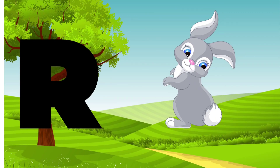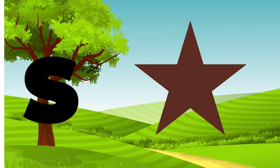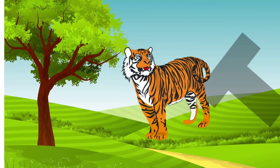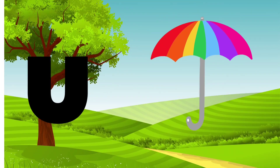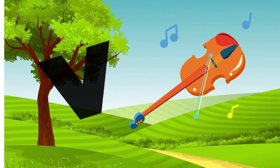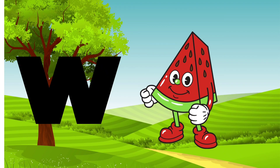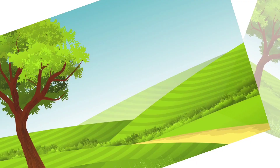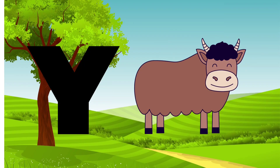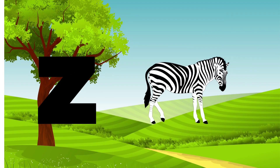R for rabbit, S for star, E for tiger, U for umbrella, B for boiling, W for watermelon, X for X-ray, Y for lap, D for zebra.